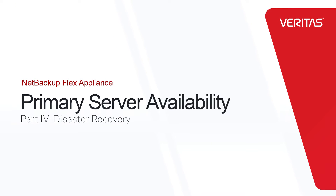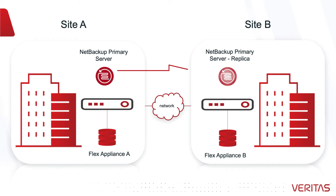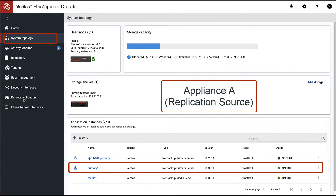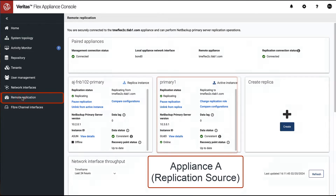In this fourth video in the primary server availability series, I would like to show you the recovery process when disaster strikes. Our environment consists of two sites, with the primary server replicating from site A to site B. Here we can see that our NetBackup primary server is online, and moving to the remote replication panel, the active instance has no data lag and paired appliances are properly connected.